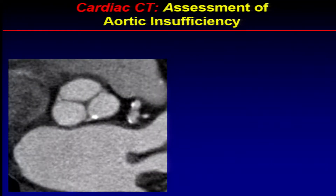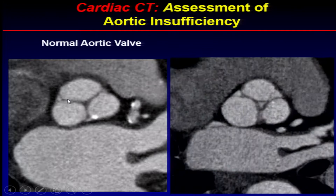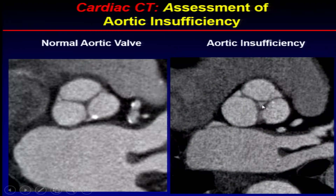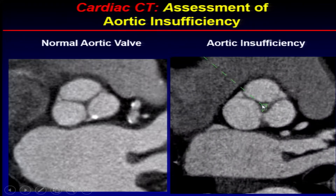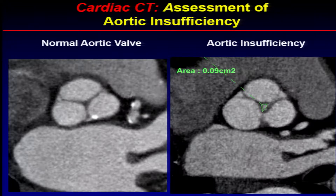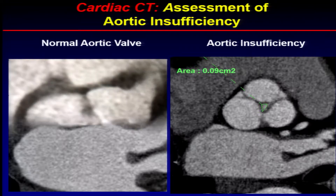This can also be seen with aortic insufficiency. This is a valve that closes very nicely in diastole. This is a valve that does not — you can see the gap in the leaflets in terms of looking at central aortic regurgitation. We can planimeter these areas as well; this was 0.09 cm², which would still be mild aortic insufficiency.